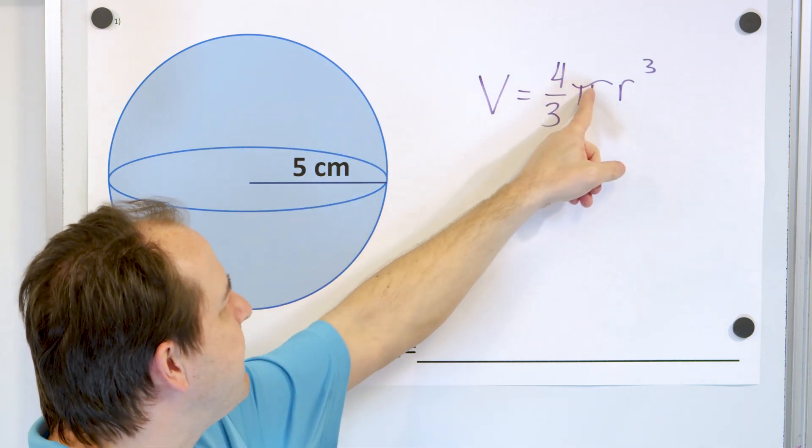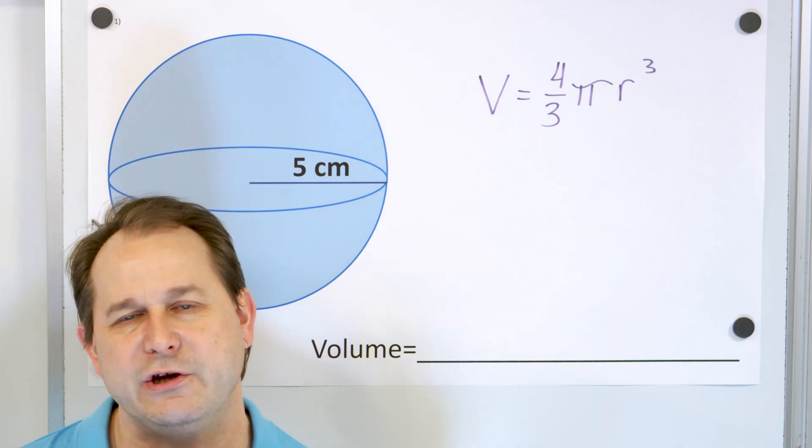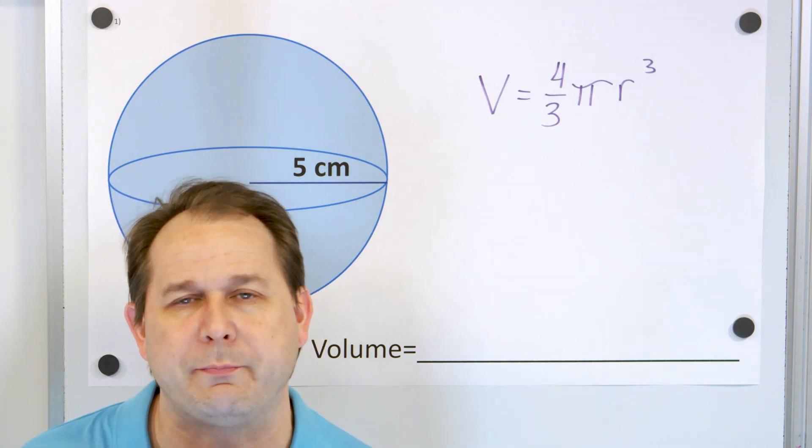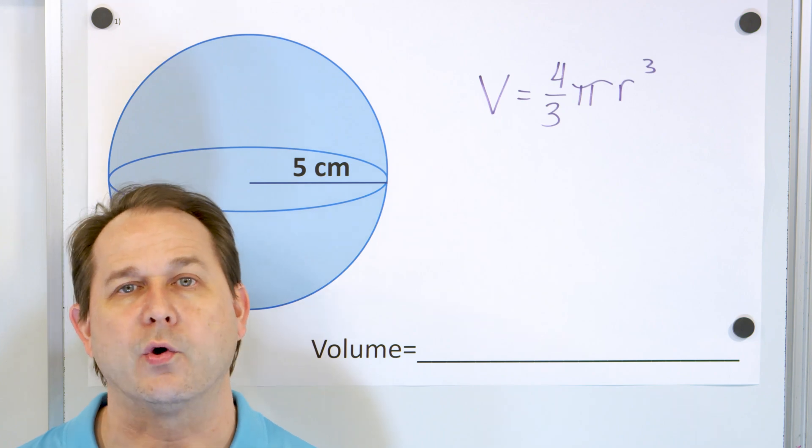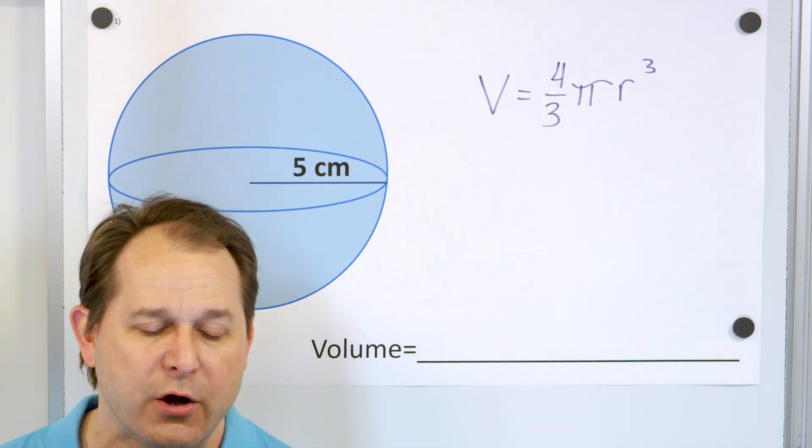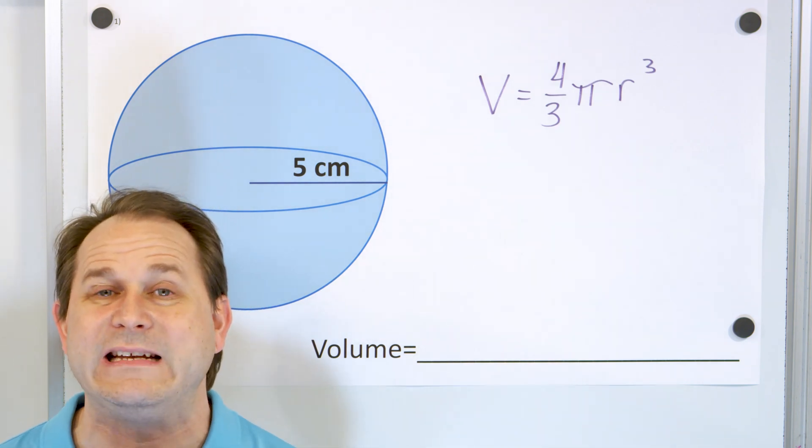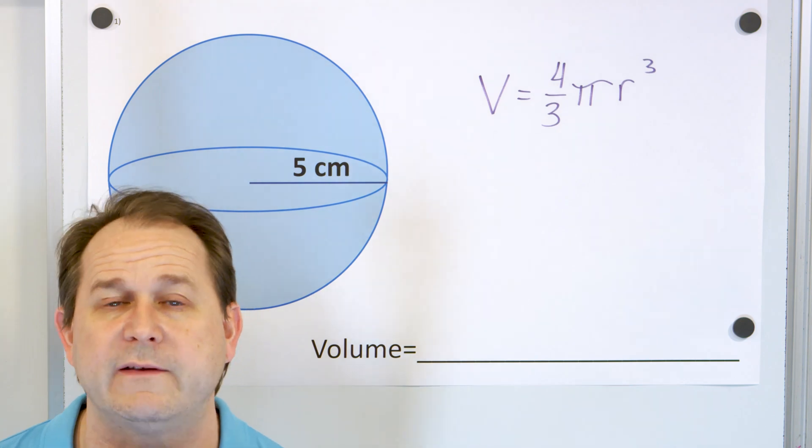You take that volume, multiply it by pi, multiply by 4, divided by 3, and that gives you the volume of the sphere. Now why is it 4 thirds pi r cubed? Why isn't it like 4 sevenths pi r cubed? Those are the questions that everyone has. Well, it turns out that we don't prove this here for you right now, because we actually need calculus to be able to show you that this is true.